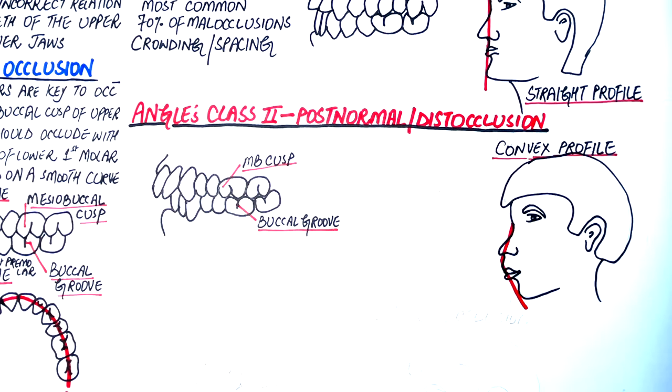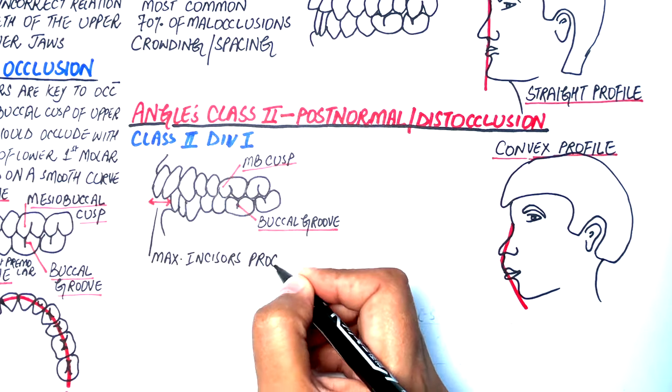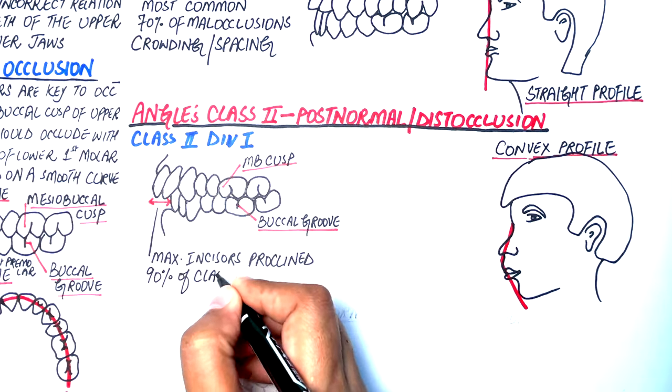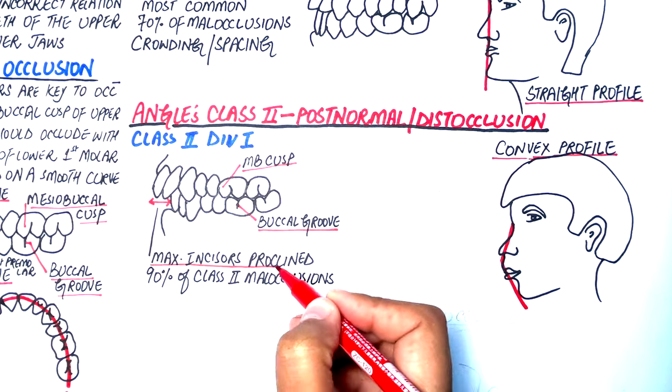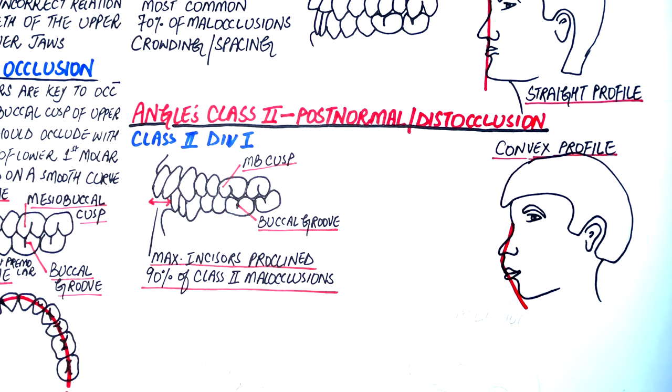Angle Class 2 is subdivided into Class 2 Division 1 and Class 2 Division 2 malocclusions. In Class 2 Division 1, the maxillary incisors are proclined and this accounts for 90% of Class 2 malocclusions.